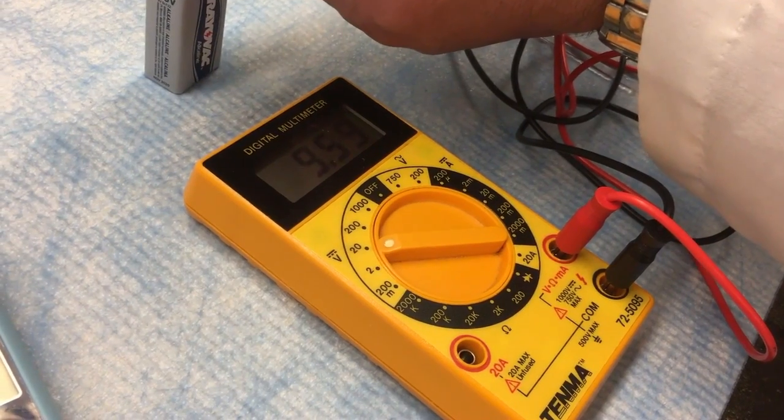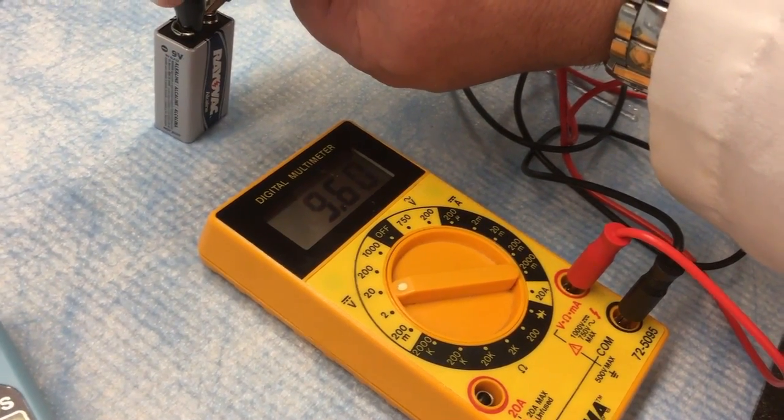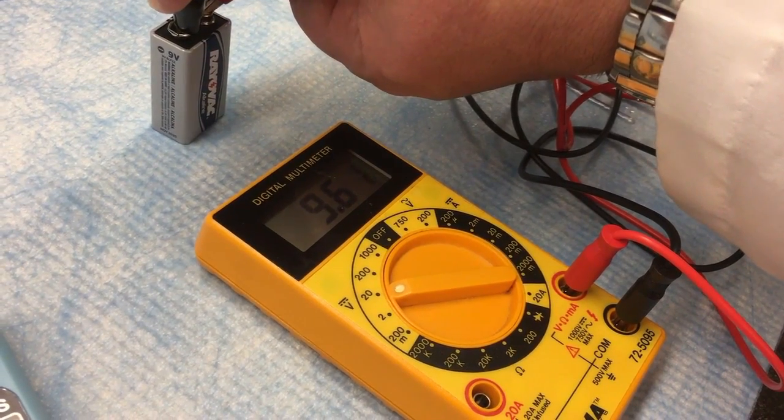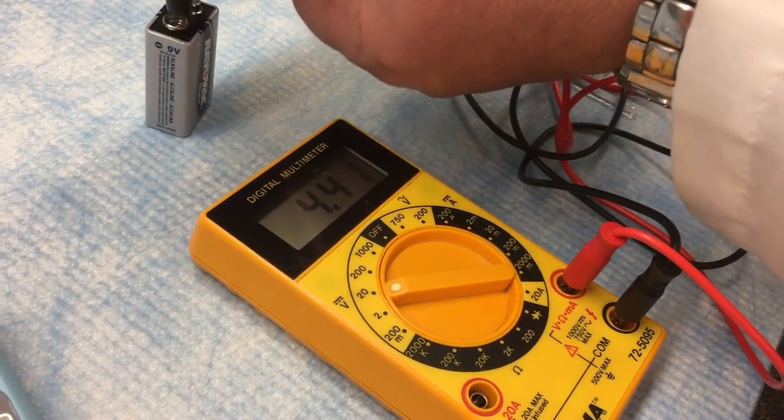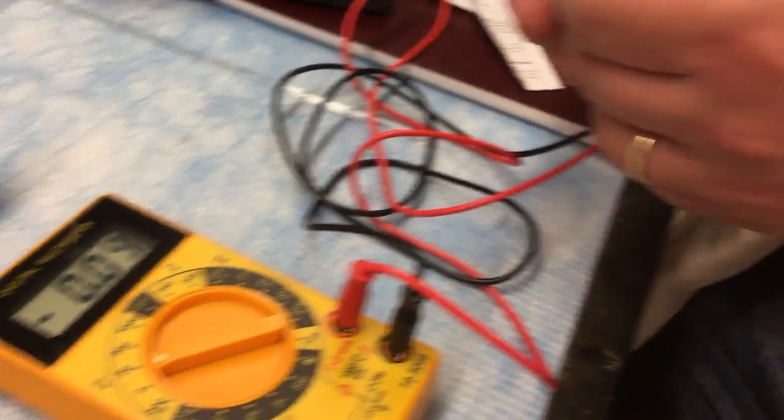Now it's saying that our 9 volt battery reads as having about 9.6 volts give or take. It could be the manufacturer overcharged it a bit, could be that our multimeter is off a bit in that range, but either way that's about the value.